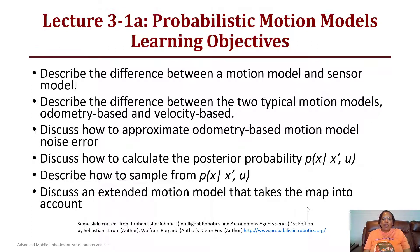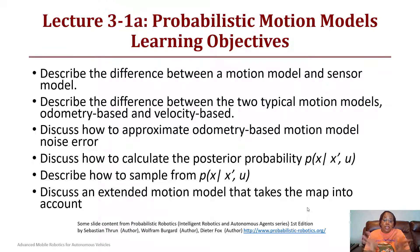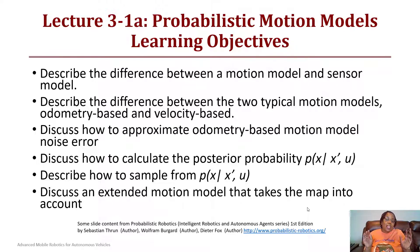Hello and welcome back. Today we will have lecture 3-1a on probabilistic motion models. The learning objectives include describing the difference between a motion model and a sensor model, describing the difference between odometry-based and velocity-based motion models, discussing how to approximate odometry-based motion model noise, calculating the posterior probability of x given x-prime and u, discussing how to sample that probability, and extending the motion model to take the map into account. There will be two days of lecture on probabilistic motion models followed by two days on probabilistic sensor models.